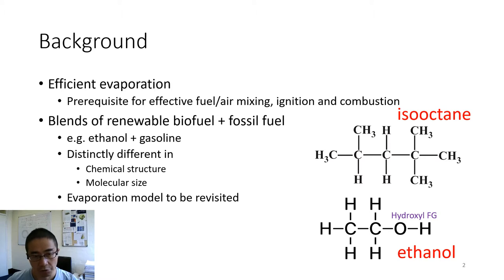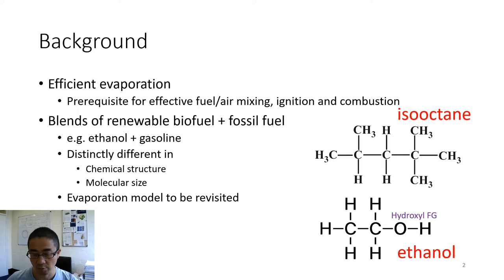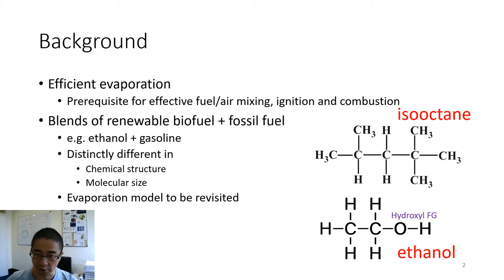For background, we know that efficient evaporation is a prerequisite for effective fuel-air mixing, ignition, and combustion. Nowadays we have more and more blends of renewable biofuels and fossil fuels — for instance, ethanol mixed with gasoline. Ethanol and gasoline are distinctly different in chemical structure and molecular size. Here is the structure of iso-octane, which is a very simple surrogate for gasoline.